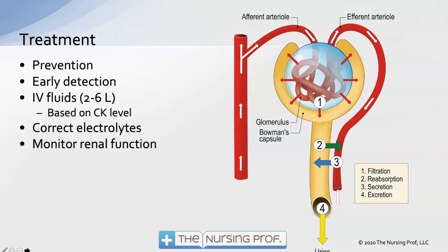Early detection is key — identifying changes in urine color is usually one of our first signs, along with muscle pain. IV fluids are a big part of treatment. Depending on the CPK level, we may give anywhere from two to six liters. We want to flush this myoglobin through the glomerulus — shown here on the right is a nephron, the functional unit of the kidney. We want lots of fluid flowing through so that myoglobin doesn't clog the filter, which is what causes acute renal dysfunction or acute kidney failure.